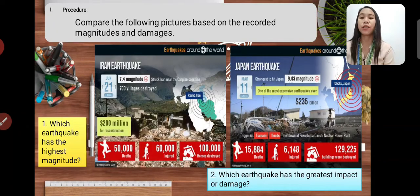Our procedure. First, compare the following pictures based on the recorded magnitudes and damages. The first picture is the Iran earthquake happened on June 21, 1990. Then the Japan earthquake happened on March 11, 2011.